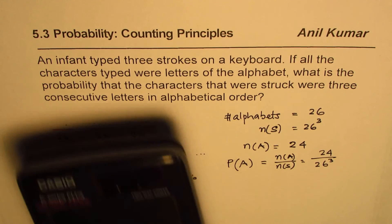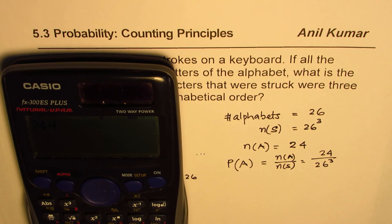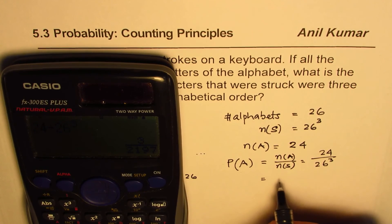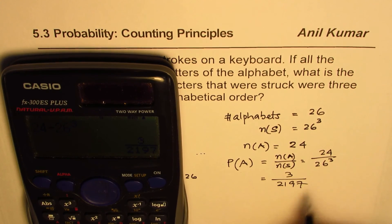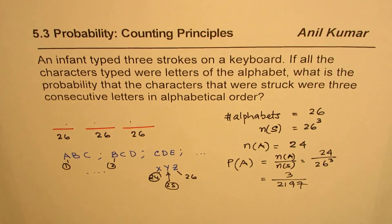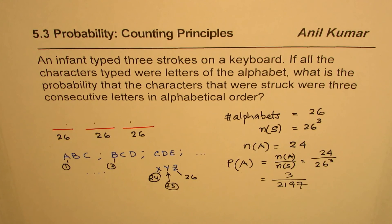If you want, we can simplify this. 24 divided by 26 cube, that gives us 3 over 2197 as our answer. So that becomes the probability of getting three characters which are consecutive letters in alphabetical order. So that is how we can do such a question.